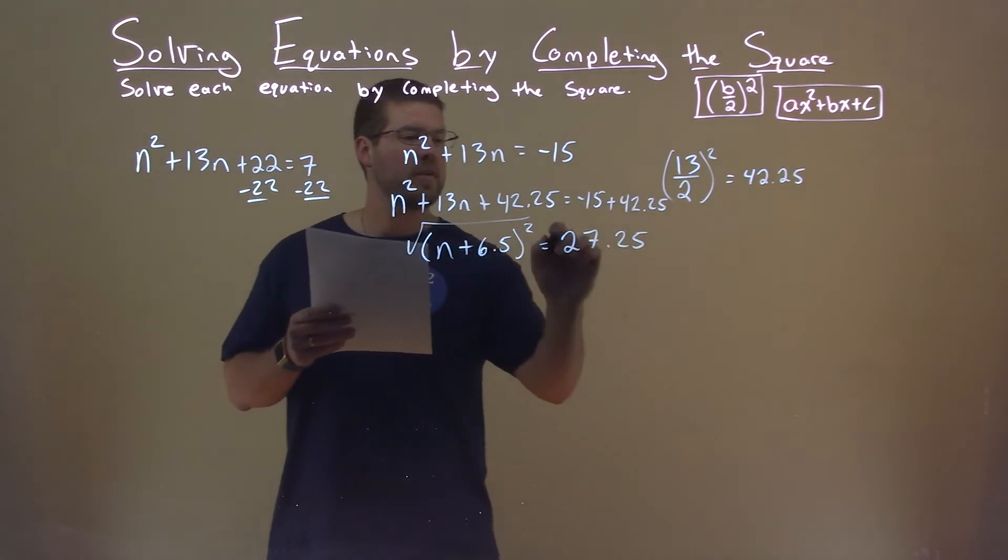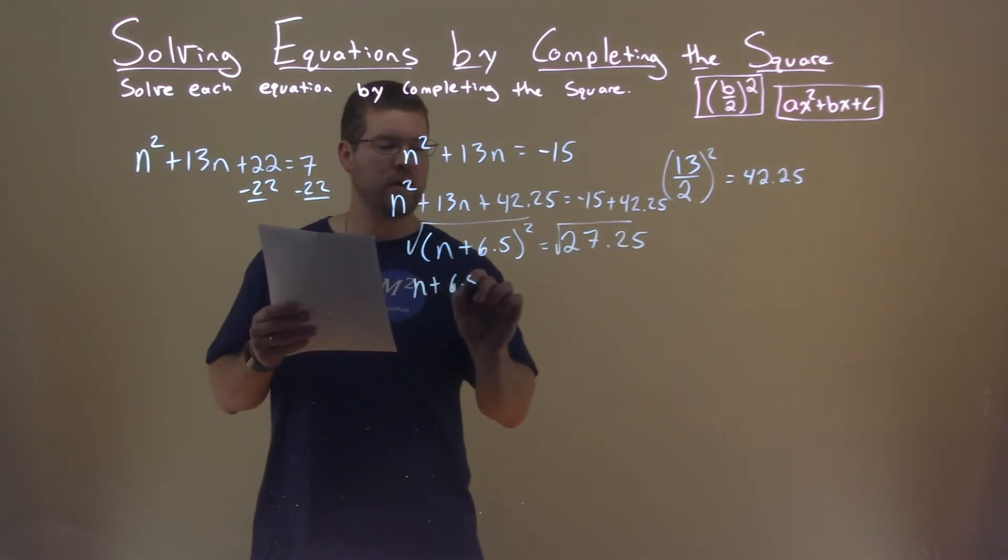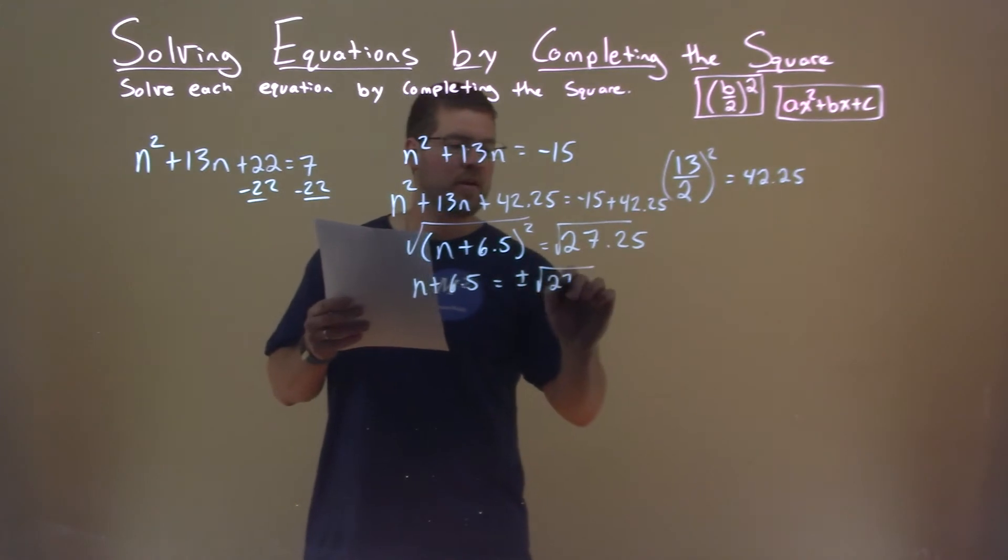We square root both sides here. And I'm left with n plus 6.5 equals plus or minus the square root of 27.25.